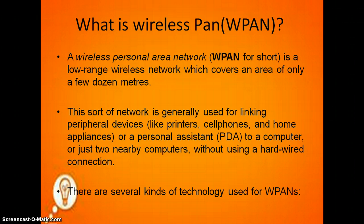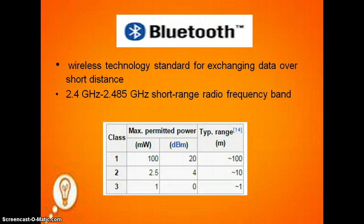There are several kinds of technologies used for WPANs. One of them is Bluetooth. Bluetooth is a wireless technology standard for exchanging data over short distances. It uses the 2.4 GHz to 2.485 GHz short-range radio frequency band. It is divided into three classes.